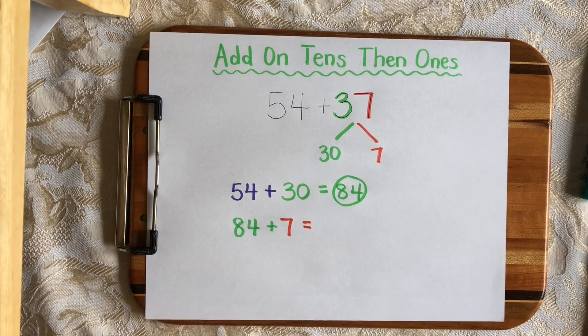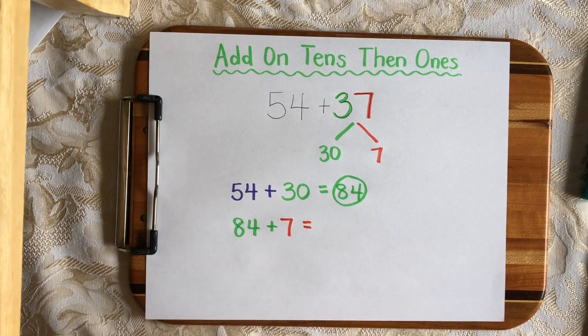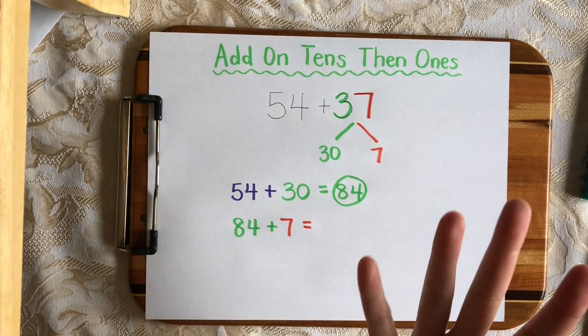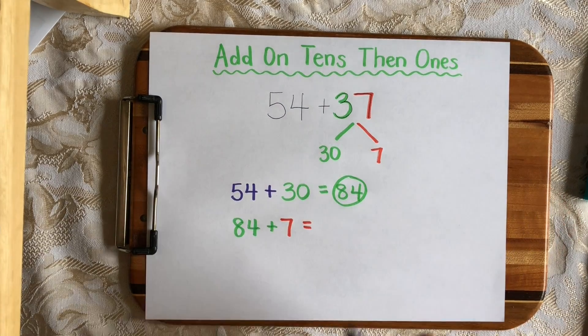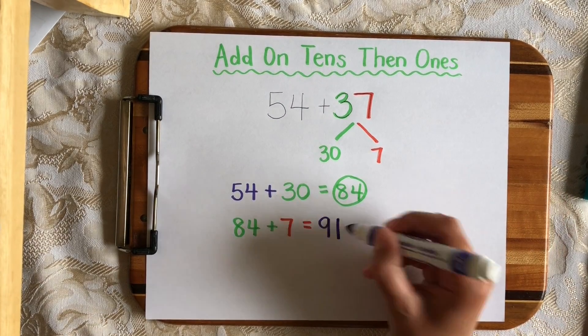So I can put 84 into my brain, and then count on 84, 85, 86, 87, 88, 89, 90, 91. And I get my sum, 91.